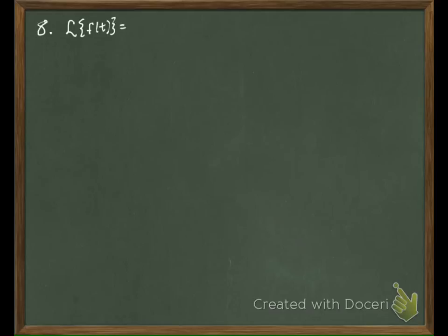Let's write this as s over s squared plus pi squared would be our first term. And then our second term would be s e to the negative 2s.